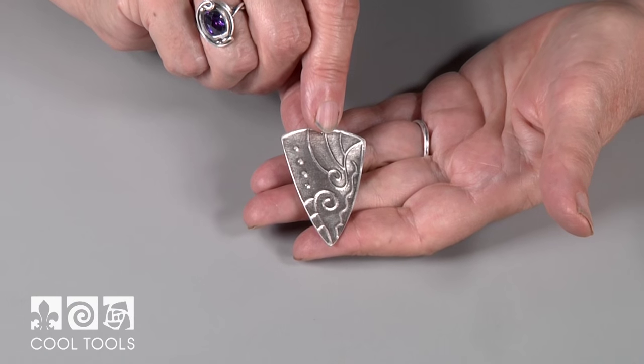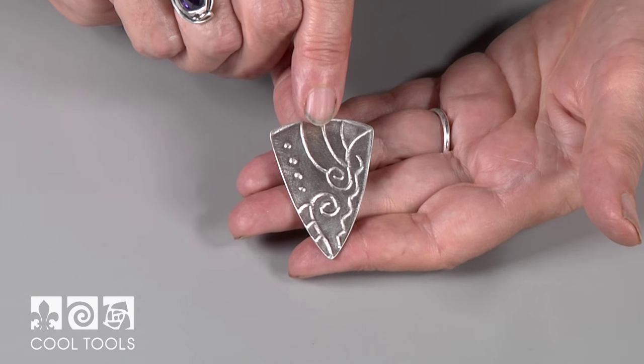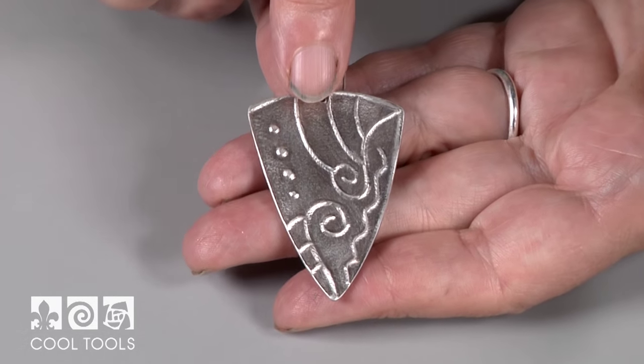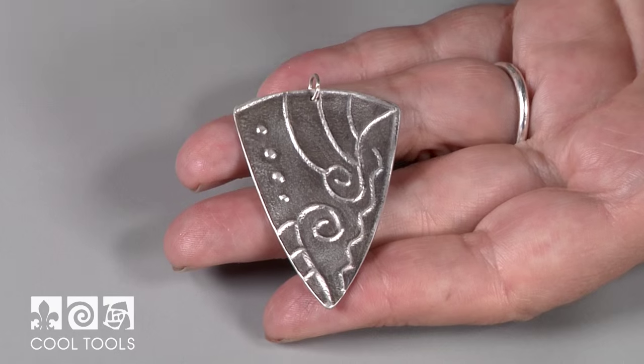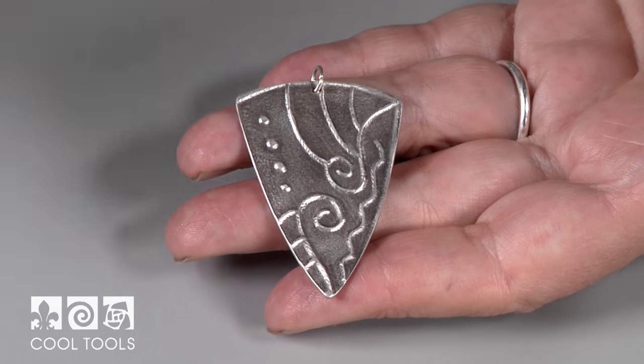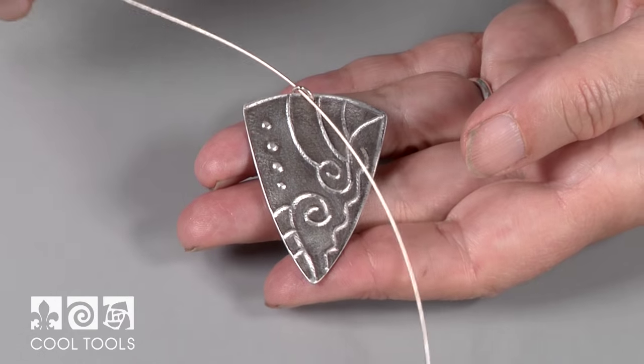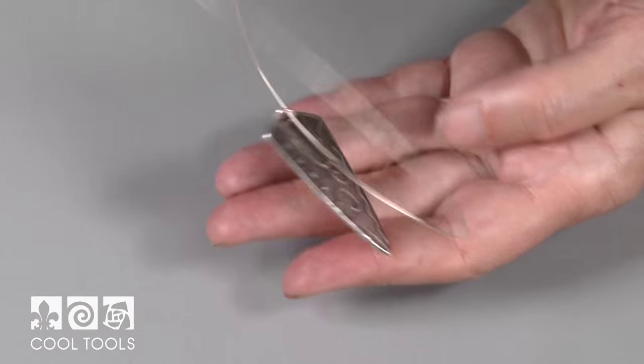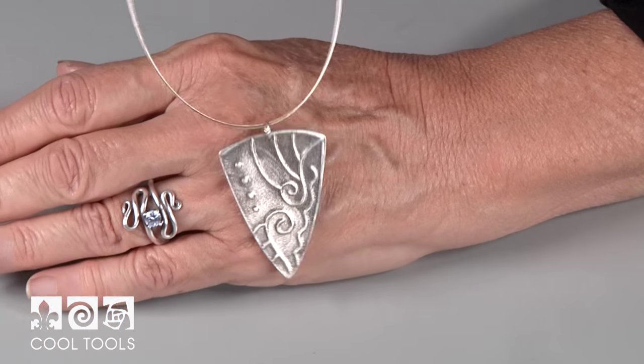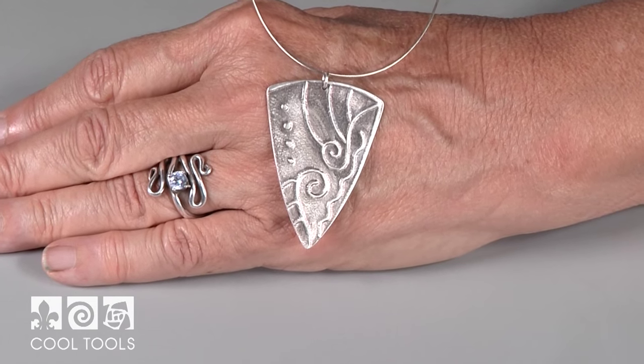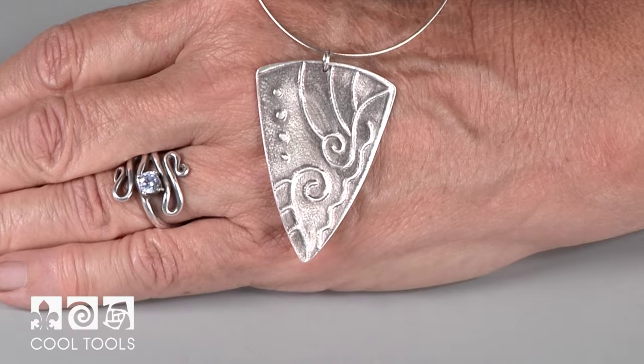Here's the finished piece after it's been fired, polished and patinaed. I like to give my pieces a satin finish, but you could finish it any way you finish your metal clay jewelry. I've put a jump ring through the hole and now I'm just going to thread a chain through that. And we have a lovely finished pendant with your own artwork in metal clay.